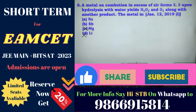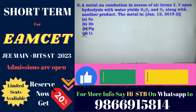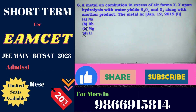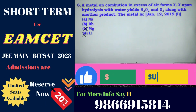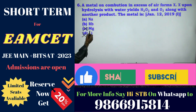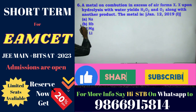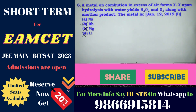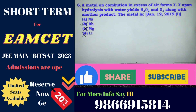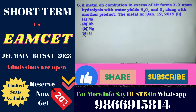The metal reacts with excess air and water — hydrolysis yields hydrogen peroxide and water along with another product. Rubidium is the most reactive. Rubidium also forms peroxides.